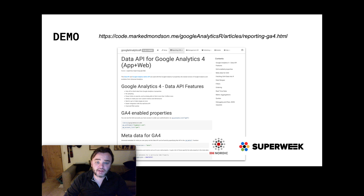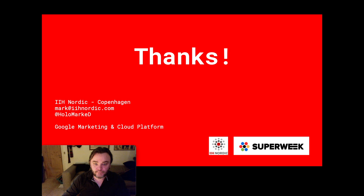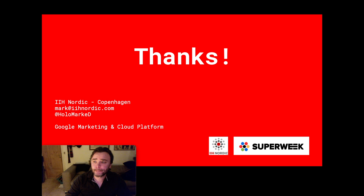Everything is written down on the Google Analytics R website, which is where I update things as they go on. It's not on CRAN yet as the official library since we're still in the alpha of the API. Once it hits beta and looks stable, I will publish it, but for now you can download it from GitHub to try it out. If you'd like to get in touch to talk about anything Google marketing, Cloud Platform, or Google Analytics, please reach out. I'm on Twitter at the handle shown, or email me at mark@ihnodwick.com. Thank you very much - bye!